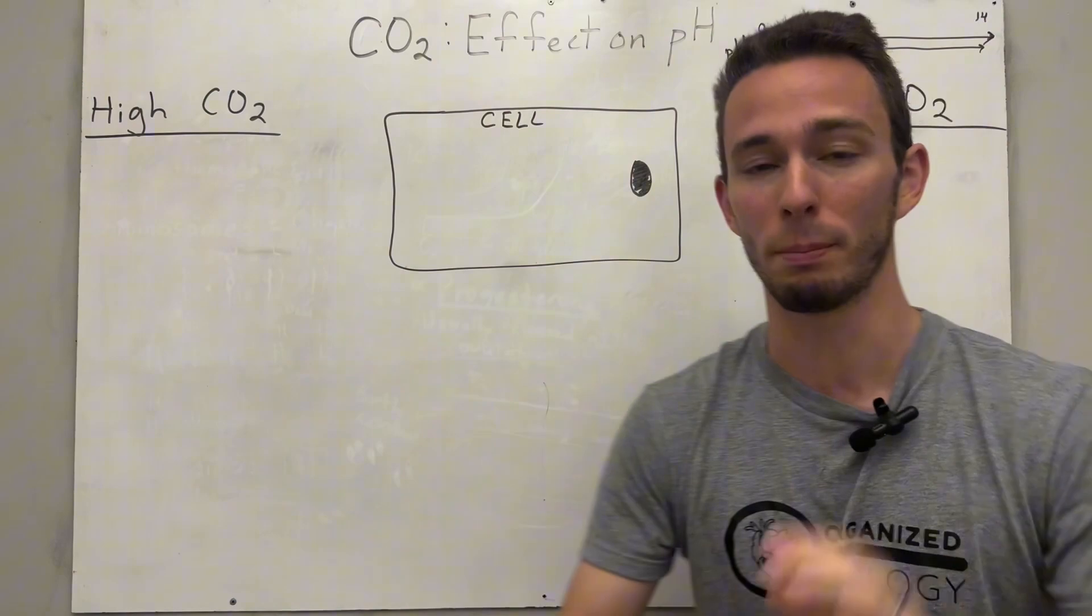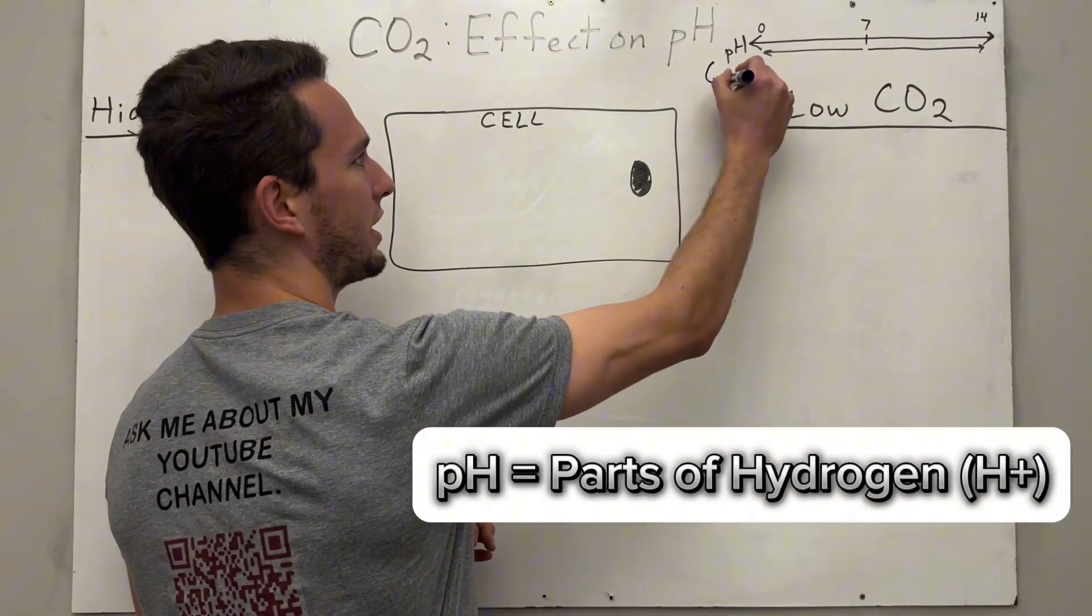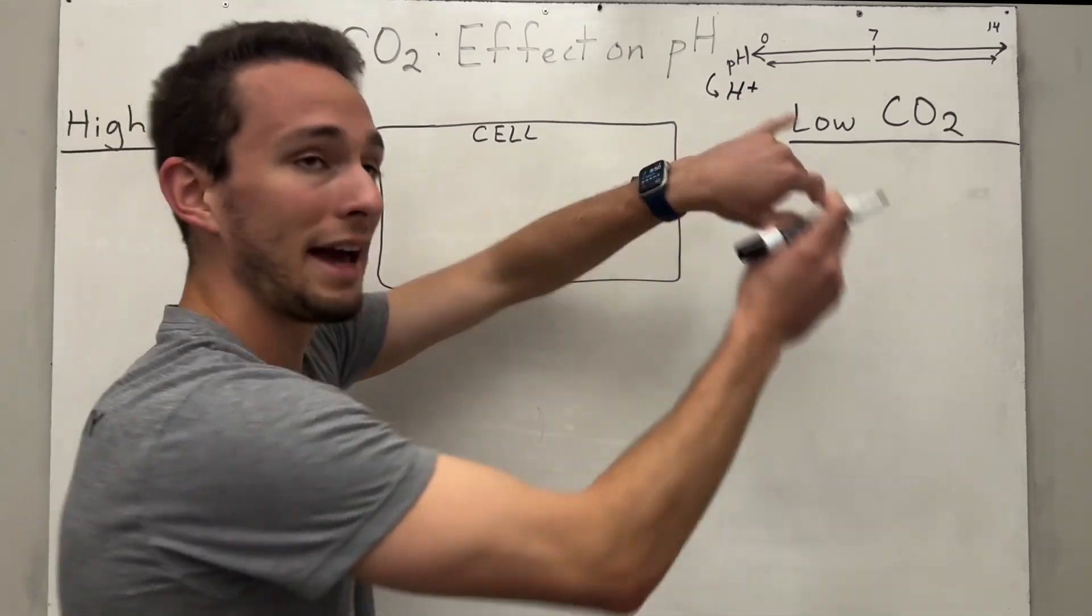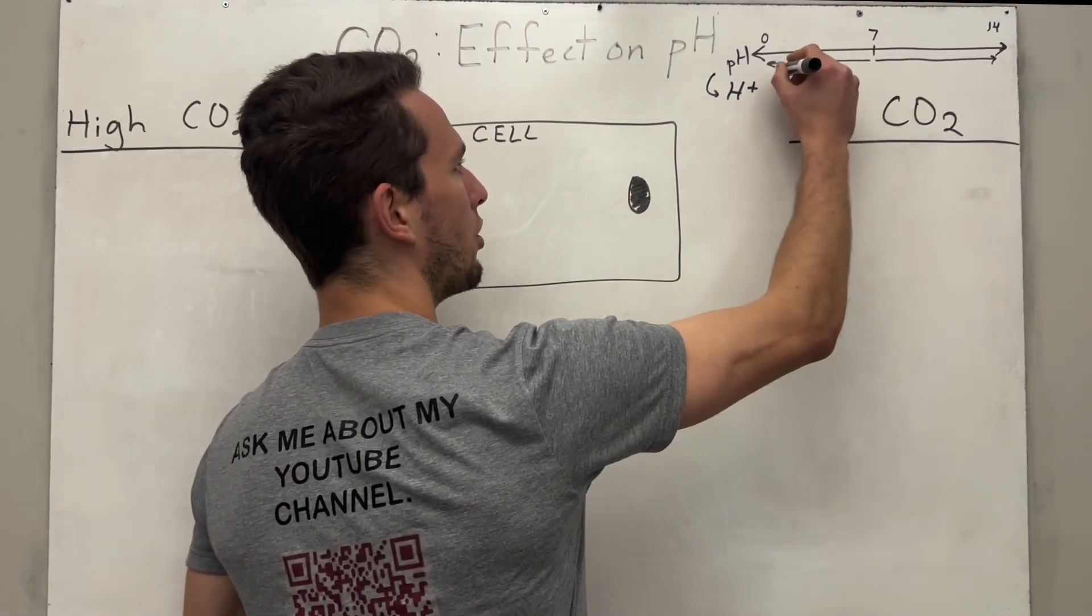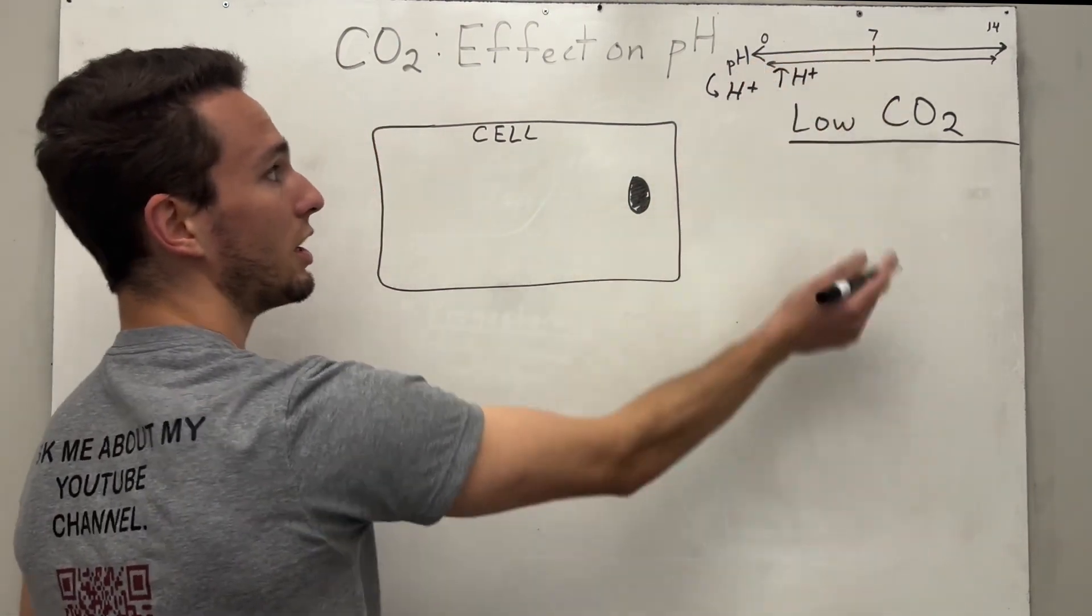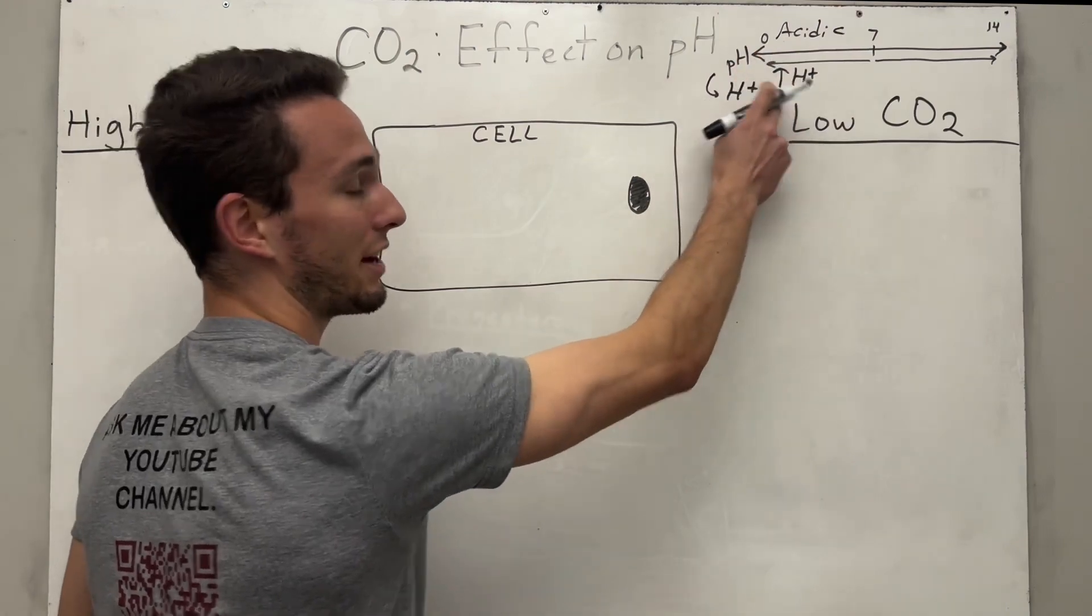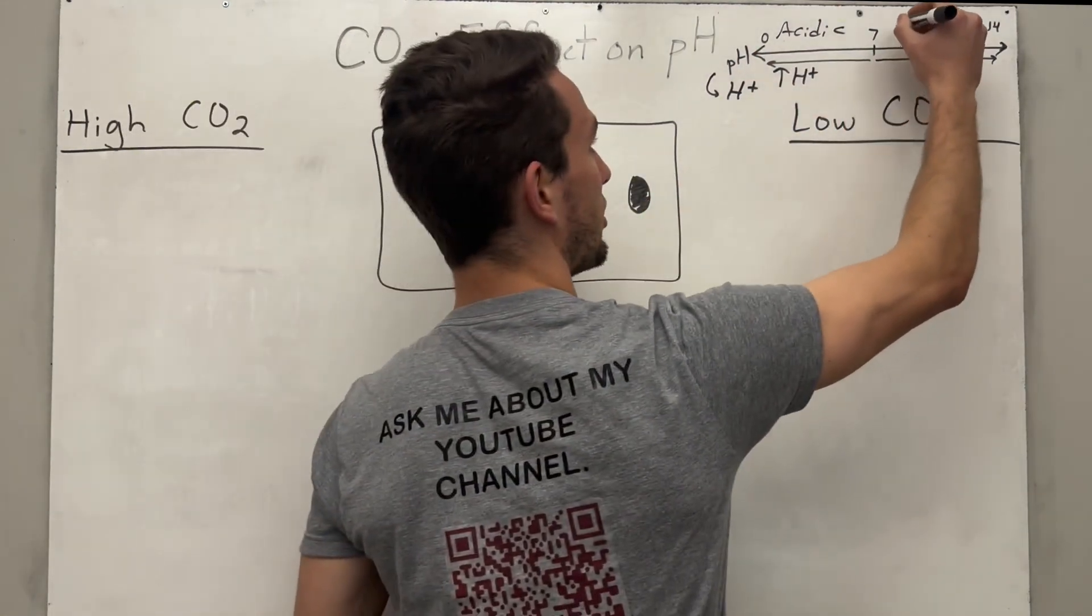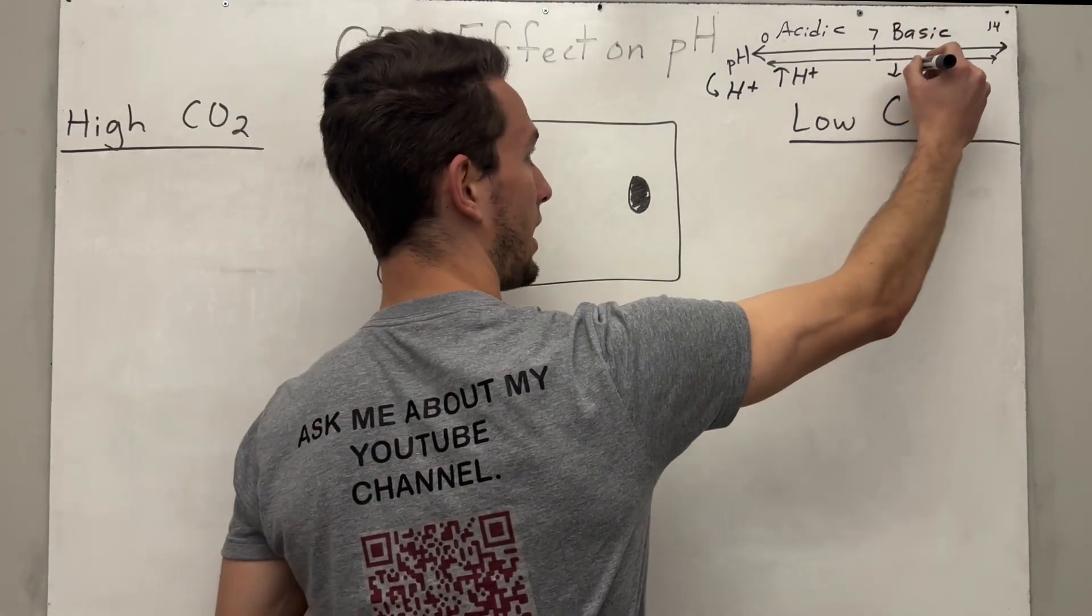Well, pH is basically standing for parts of hydrogen. So pH stands for parts of hydrogen, specifically hydrogen that is ionized. Now this may not make sense to you, but that just means it's a hydrogen atom and it's dissolved in water. So the more hydrogen ions we have, the more acidic the solution will be. In other words, the lower the pH will be. So from zero to seven, that is considered acidic because it has a lot of hydrogen ions, but it's above seven and up to 14, this is considered basic or alkaline. And that means obviously that we have less hydrogen ions.